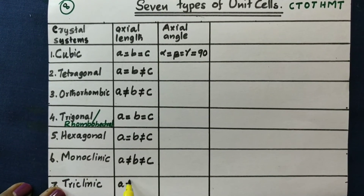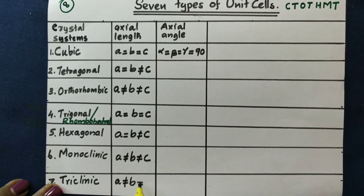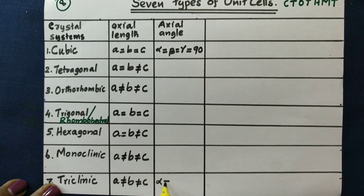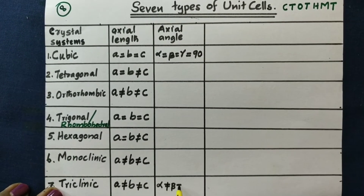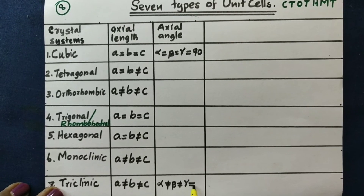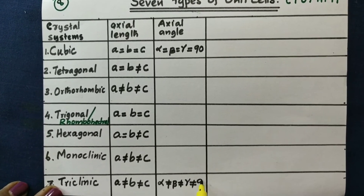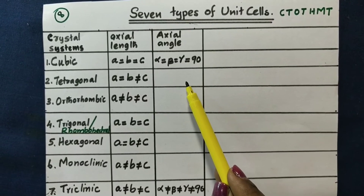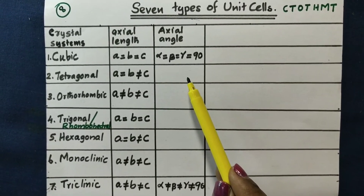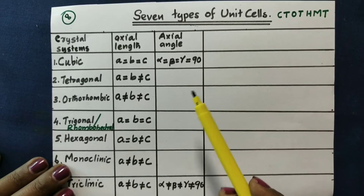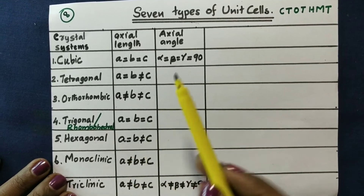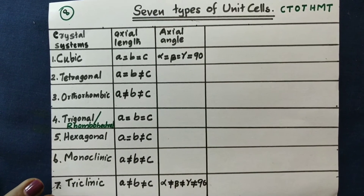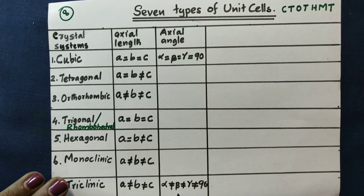For triclinic: A is not equal to B and not equal to C. Alpha is not equal to beta, not equal to gamma, not equal to 90 degrees. This is the most unsymmetrical system — let's go to the trigonal mark.